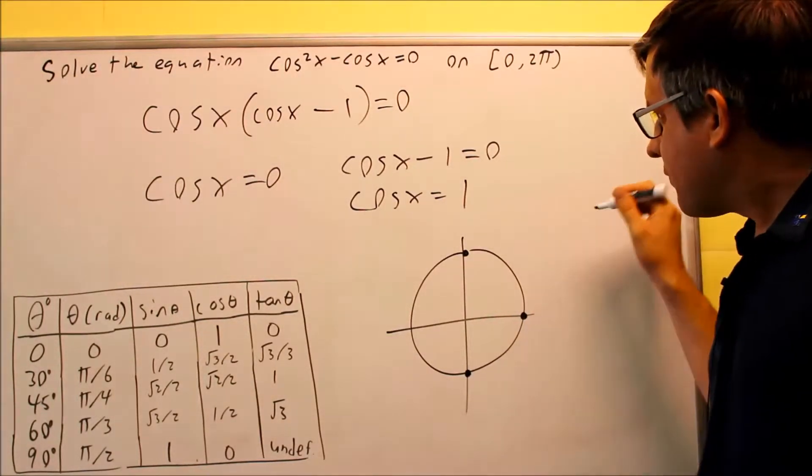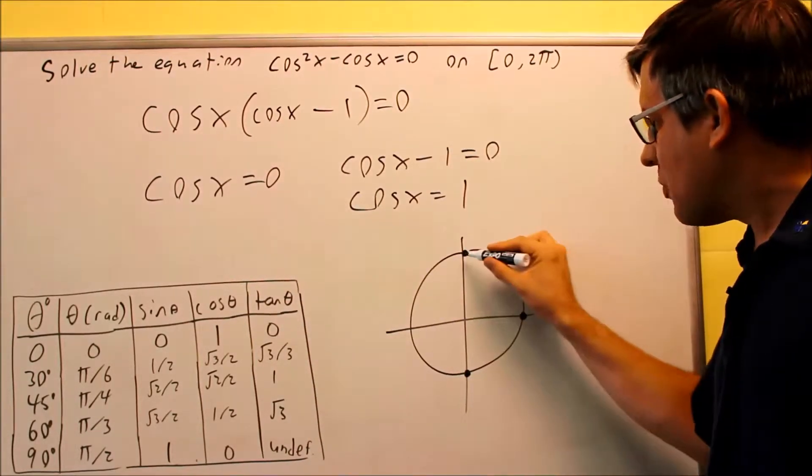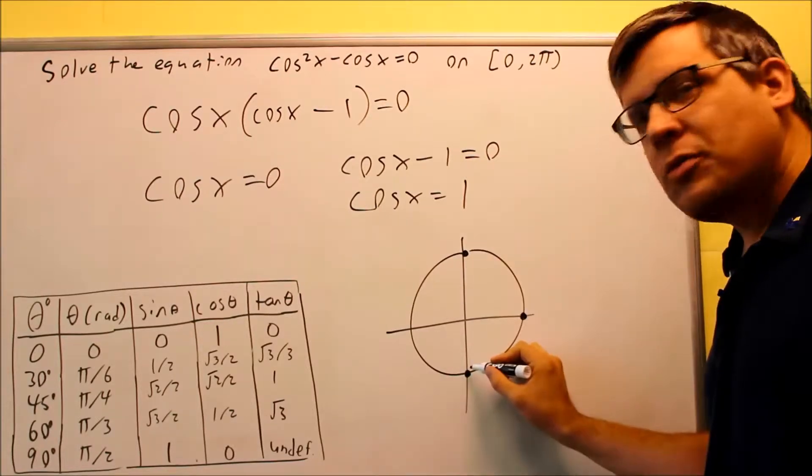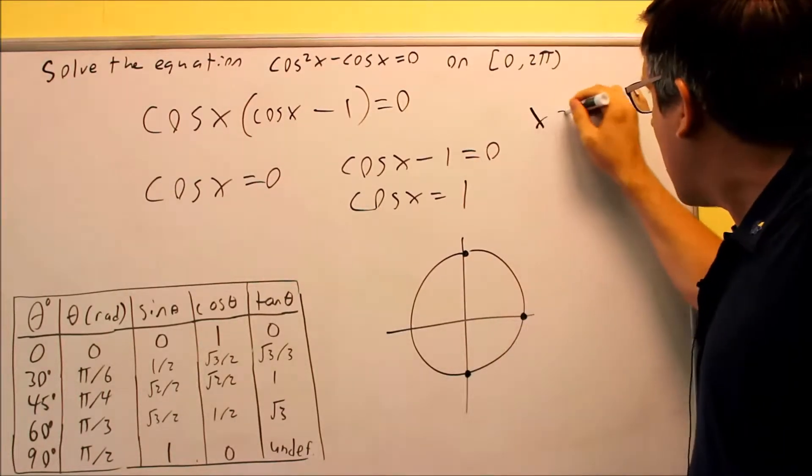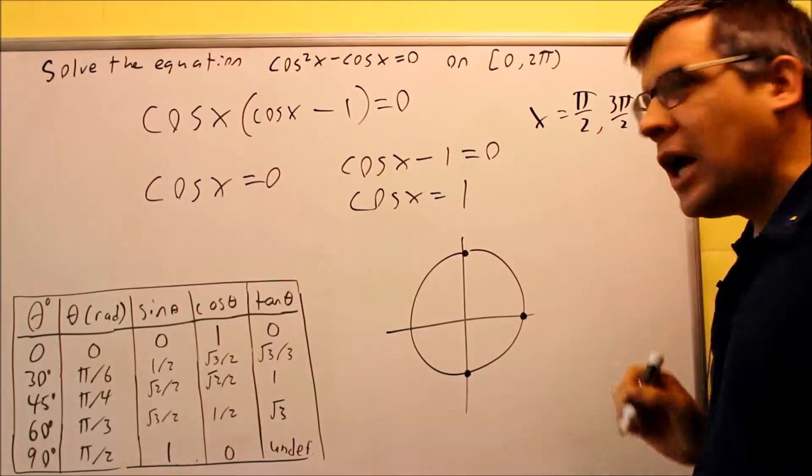First of all, where cosine equals zero, we're going to indicate these two values. From the unit circle, this is pi over two and down here would be three pi over two. So my answers for x would be pi over two and three pi over two.